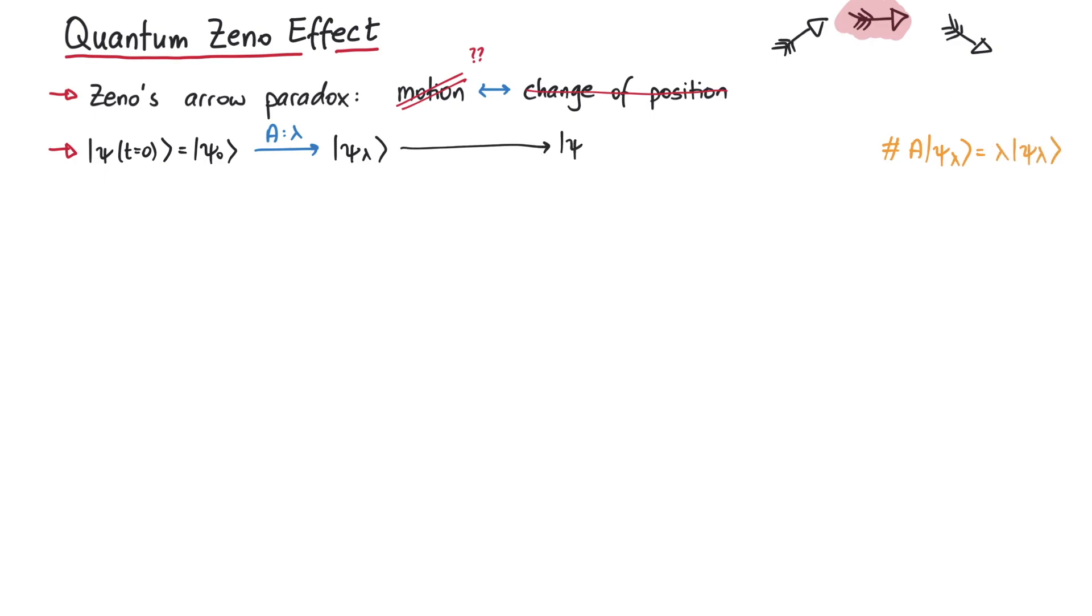If we leave the system alone, then the wave function will change according to the time-dependent Schrodinger equation, and it might yield a different eigenvalue at a later time. However, we don't give the system enough time to do its time evolution.